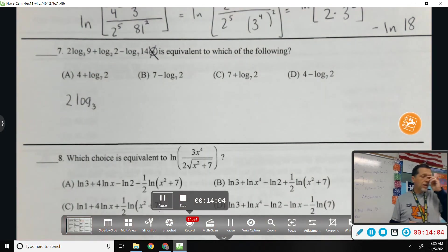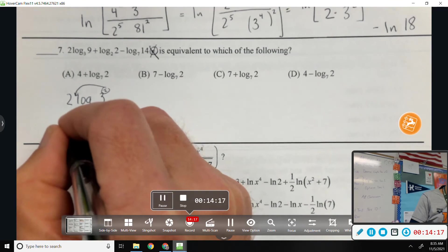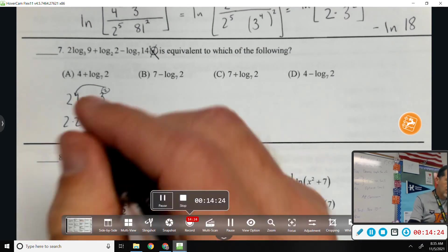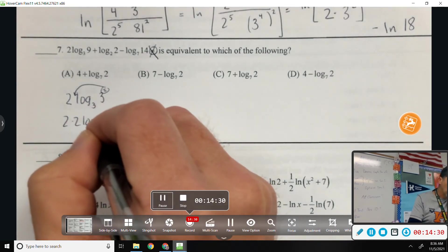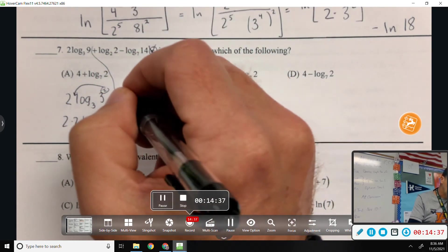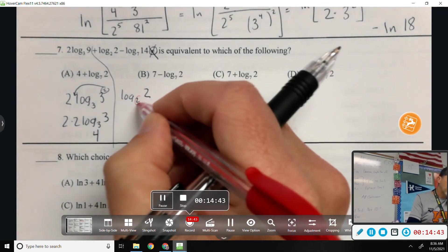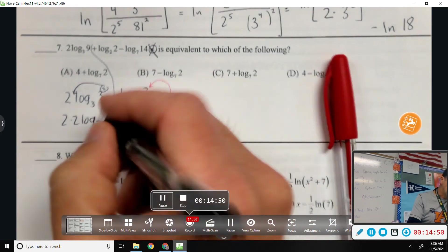So log base three of nine. Well, hold on then. I need to think differently about this one. How could I rewrite nine? Three squared. Wait. Because what's log base three of three? That means three to what power equals three? One. So two times two times one is four. Log base two of two. What's that equal to? Think about the fish hook. Two to something equals two. Well, that's one as well.